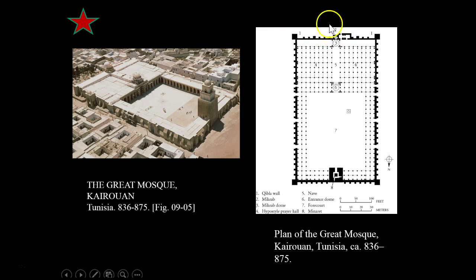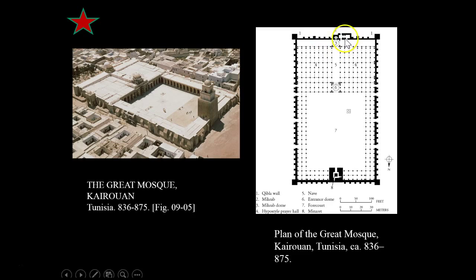Another important characteristic is the mihrab — this is a little niche in the qibla wall, number two on the floor plan, with the mihrab dome above it being number three. In some ways it functions like an altar. The participants don't have to visually see it; they just have to be pointed towards Mecca, which is what the mihrab does — it's oriented in the direction of Mecca. The wall that the mihrab is located in is called the qibla wall — this was a question on your quiz. All worshippers face in that direction.